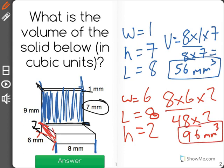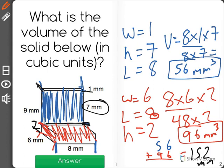Now, in order to find the volume of the total shape, we have to take 56 from the top and add in 96 from the bottom section to find out that it is a total of 152 millimeters cubed.